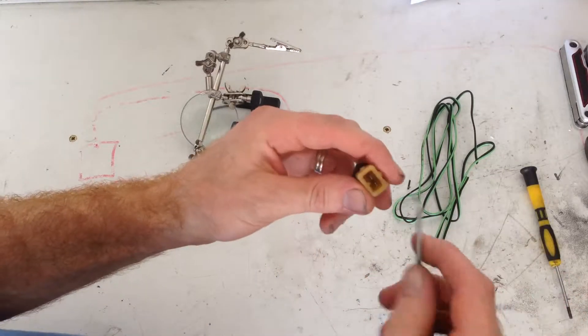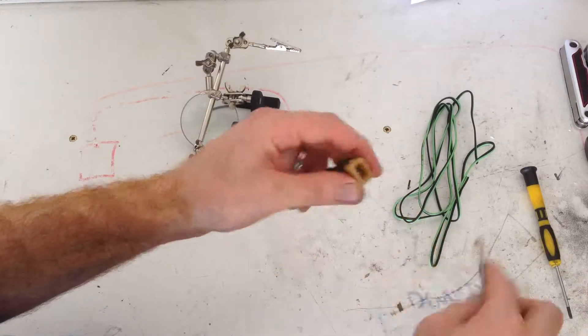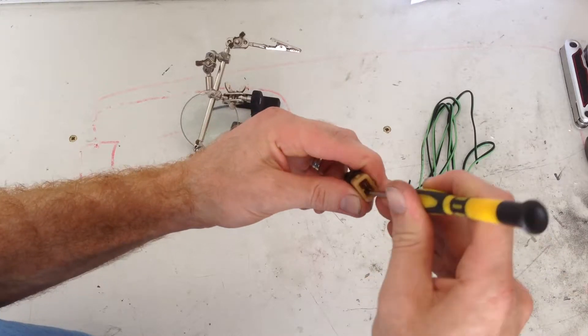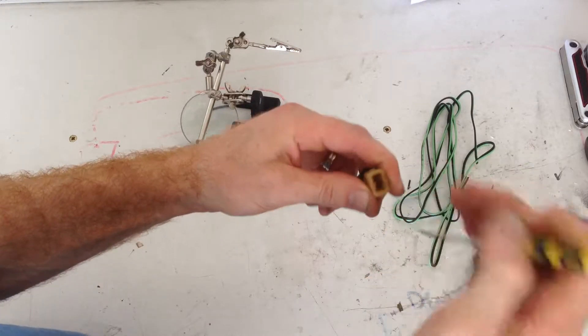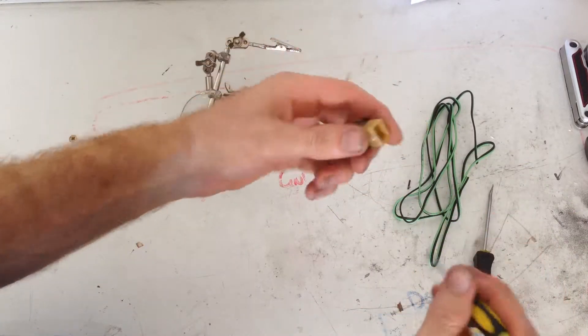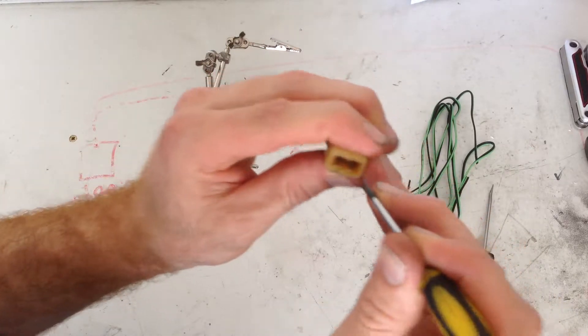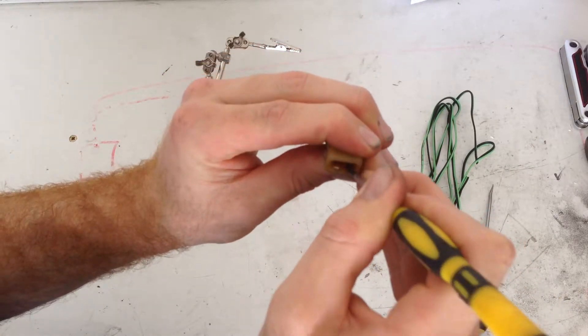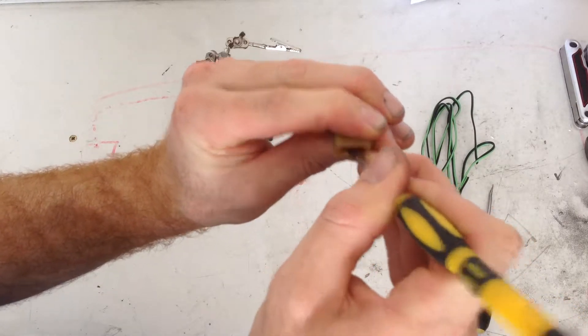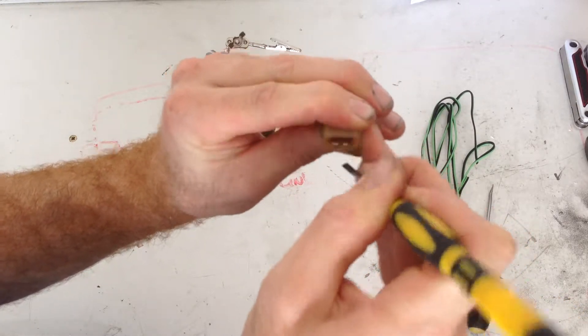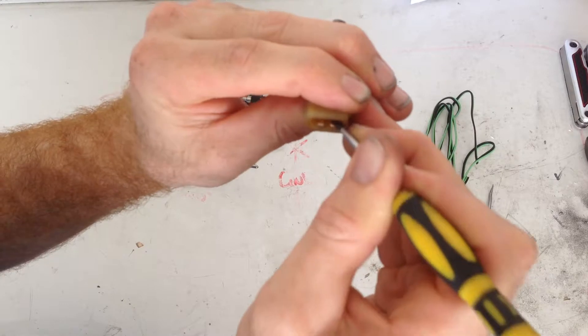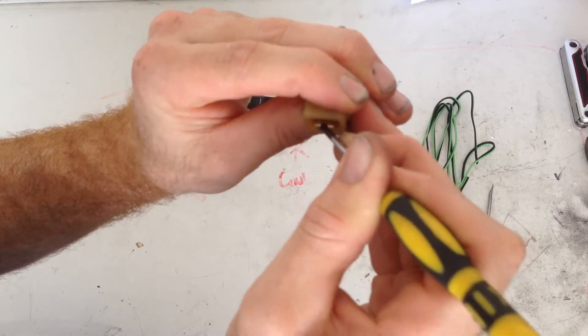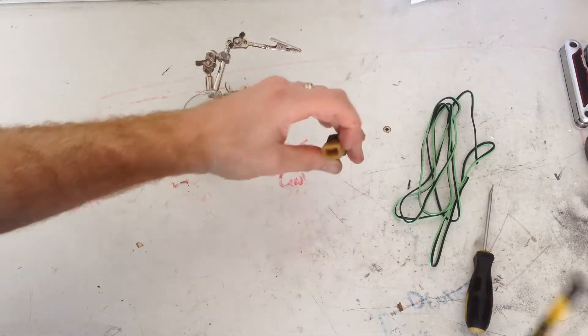Okay, so next I'm just going to bend these tabs over a bit. Like that. And then I'm going to solder some cable onto here so we've got a permanent connection. I'm just going to clean them a bit more.